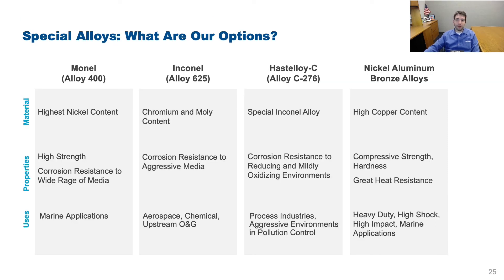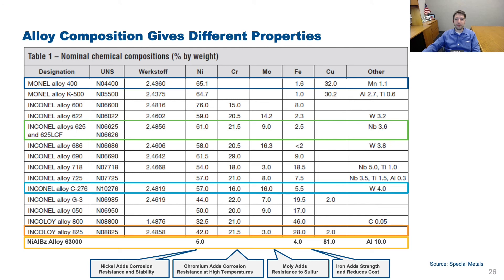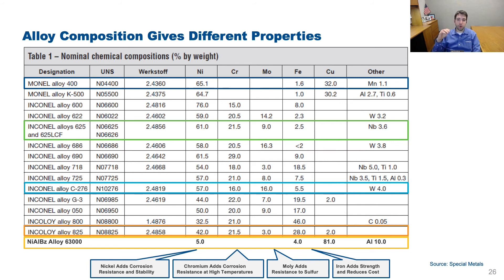So what are our alloy options? Four examples of alloys used for corrosion resistance include Monel, Inconel, and Hastelloy C — all high nickel alloys commonly used in corrosive oil and gas applications — as well as nickel-aluminum bronze, commonly used on deepwater platforms for its resistance to seawater corrosion. Key elements to consider in alloy composition include: nickel, which adds corrosion resistance and stability; chromium, which adds corrosion resistance in high-temperature environments; molybdenum, which adds resistance to sulfur and is ideal for sour applications; and iron, which adds strength and lowers cost.